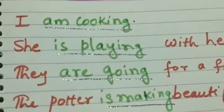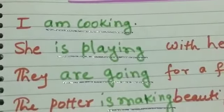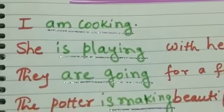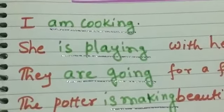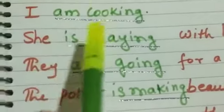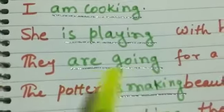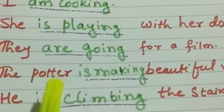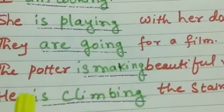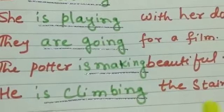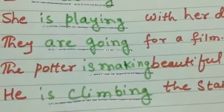Present continuous tense. The sentences which talk about actions that are happening now are called present continuous tense. These verbs — am cooking, is playing, are going, is making, is climbing — all are in present continuous tense.